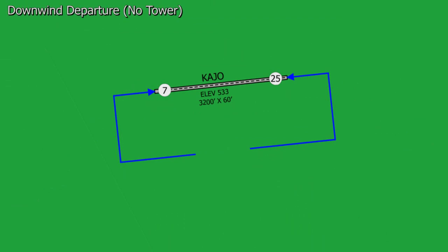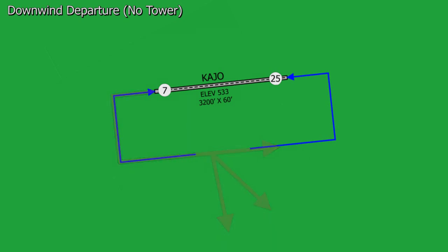For the downwind departure at Corona, from Runway 25 we can only do a left downwind departure, and from Runway 7 we can only do a right downwind departure.